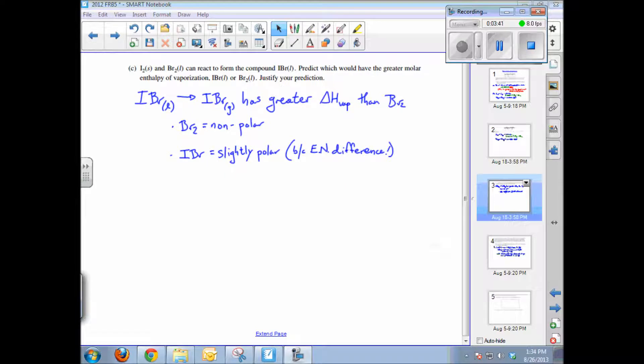Part C asks the following: Iodine solid and bromine liquid can react to form the compound IBr. Predict which would have the greater molar enthalpy of vaporization, IBr or bromine liquid, and justify that. Again, this is a question about attractive forces. The higher molar enthalpy of vaporization would correspond with the compound or material that has the greater attractive forces.